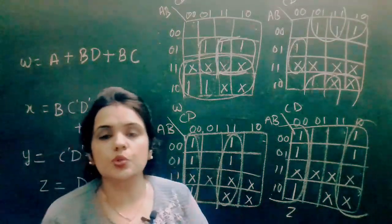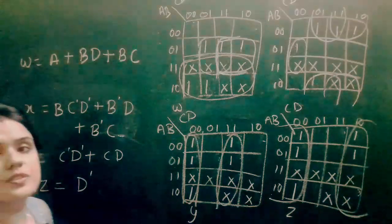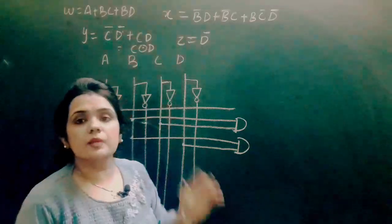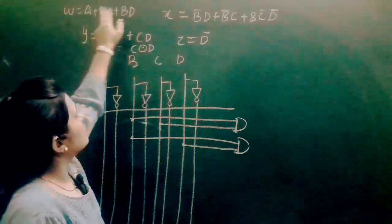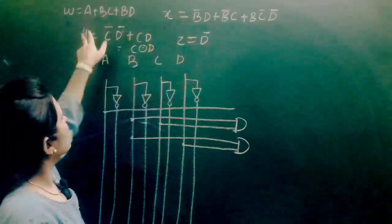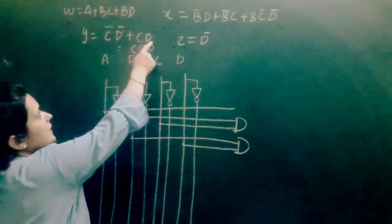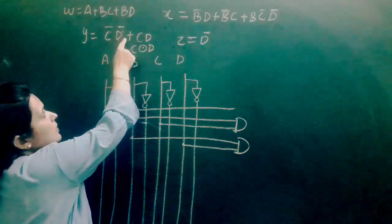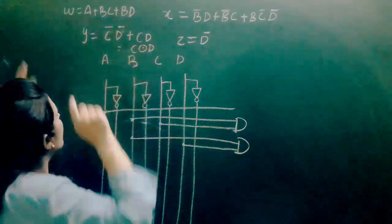So these are our output functions. We just have to draw a circuit diagram for these output functions. These are our four output expressions obtained by solving the K-maps: W, X, Y, and Z. Note that Y equals CD + C̄D̄, which can also be written as C XNOR D.